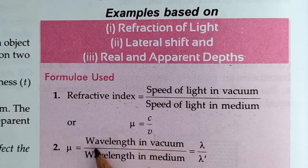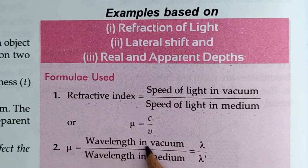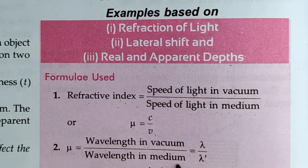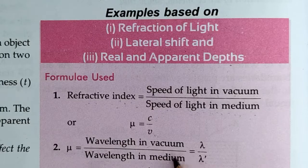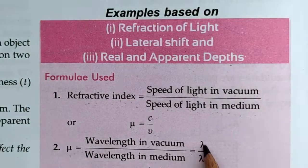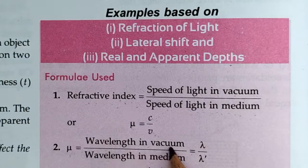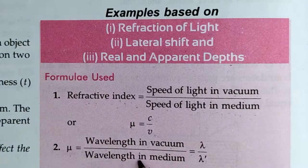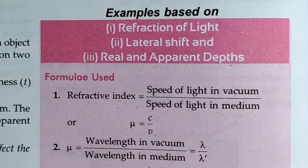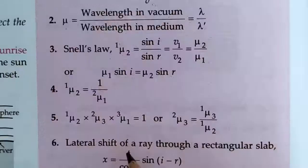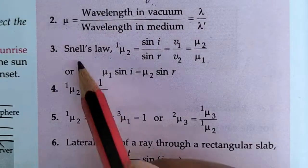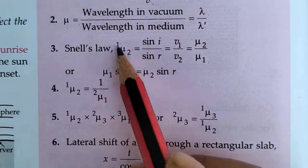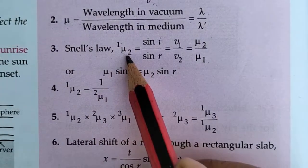In the form of wavelength, mu equals wavelength in vacuum divided by wavelength in medium. That is, mu equals lambda divided by lambda dash, where lambda is wavelength in vacuum and lambda dash is wavelength in medium.